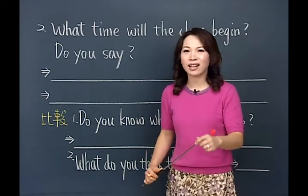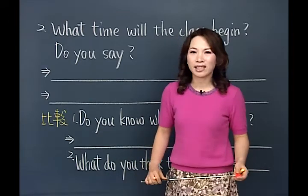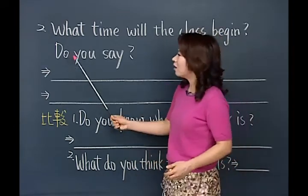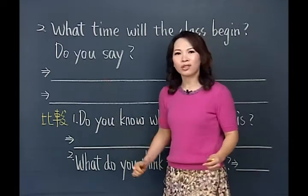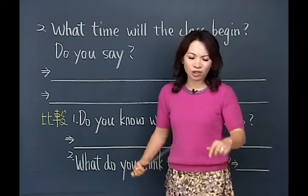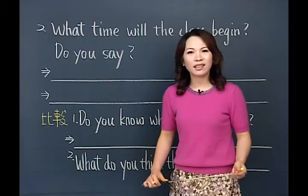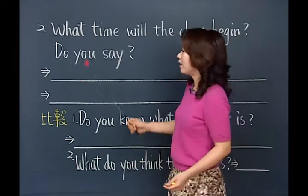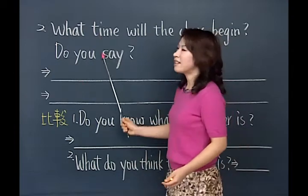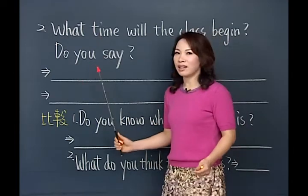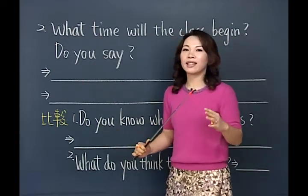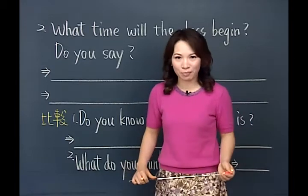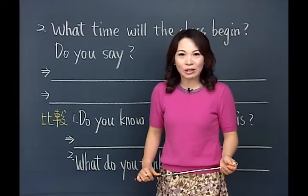好，先按照基本的：比较复杂的句型都是从简单的句型变来的。所以你已经知道这里有疑问词What time，疑问词呢放句中，主要子句在这里是Do you say（你说呢）。主要子句写下来之后，疑问词摆句中：What time写下来。